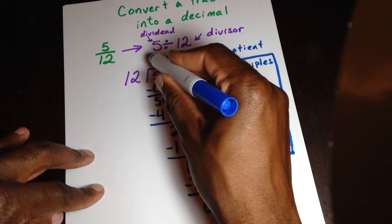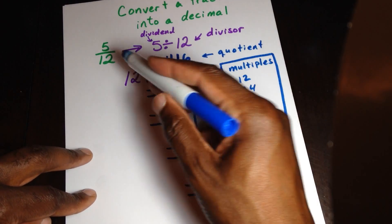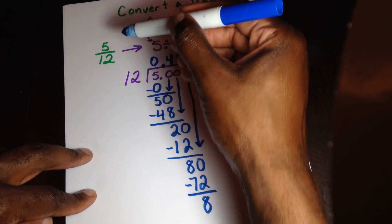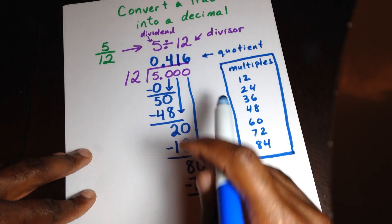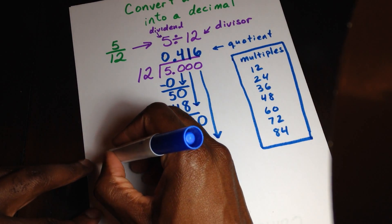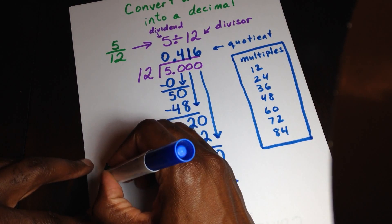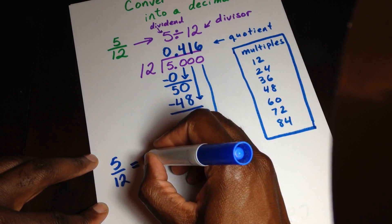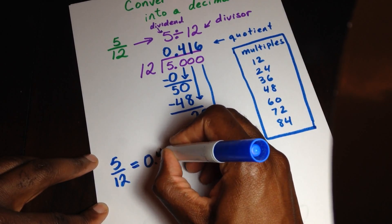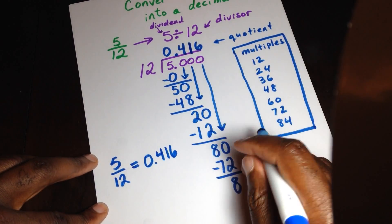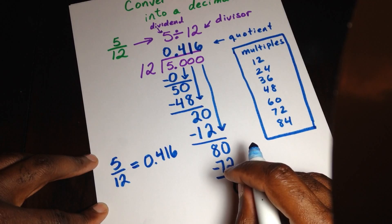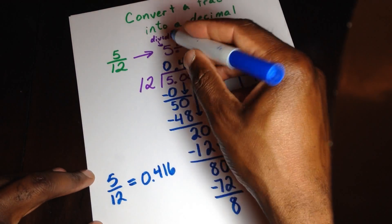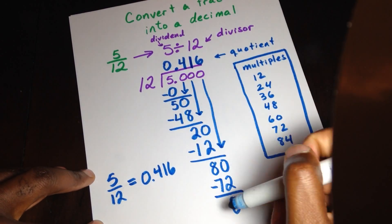And right here is my quotient. So when I have 5 divided by 12, or as a fraction, 5 twelfths, that will be equal to, let me put it over here, 5 twelfths is equal to 0 and 416 thousandths. And there you have it. That's how you turn or convert a fraction into a decimal.